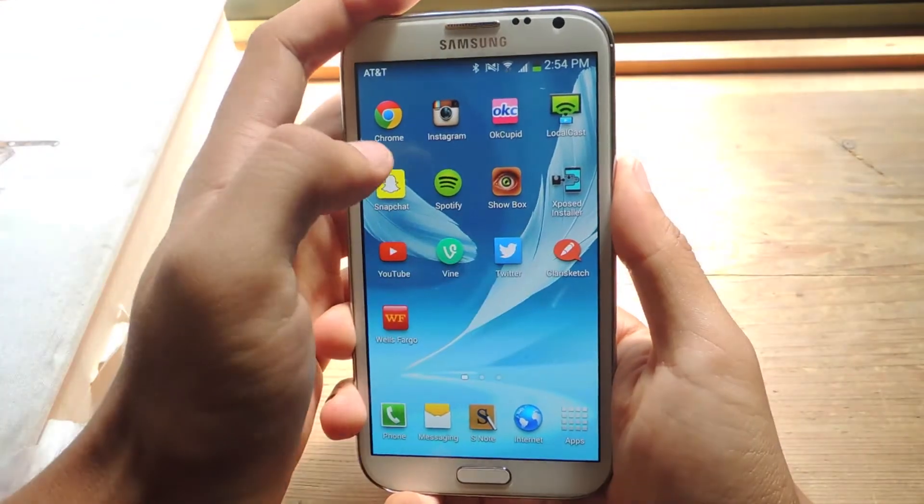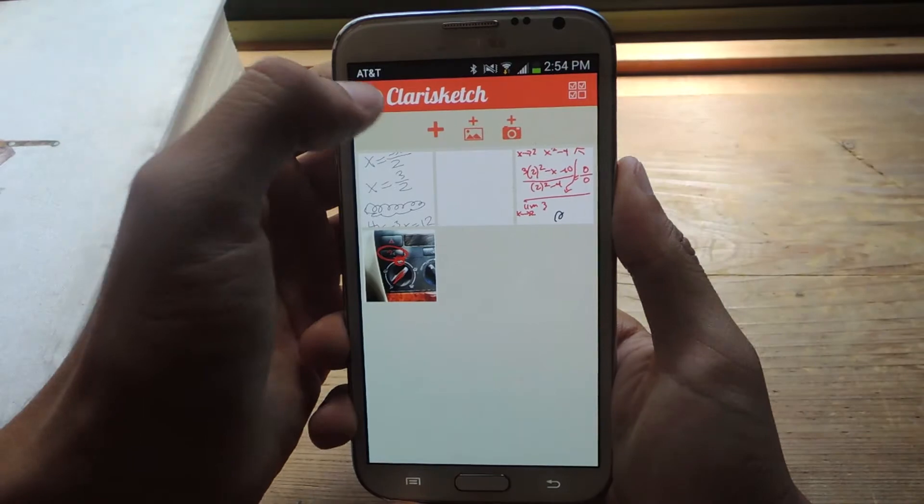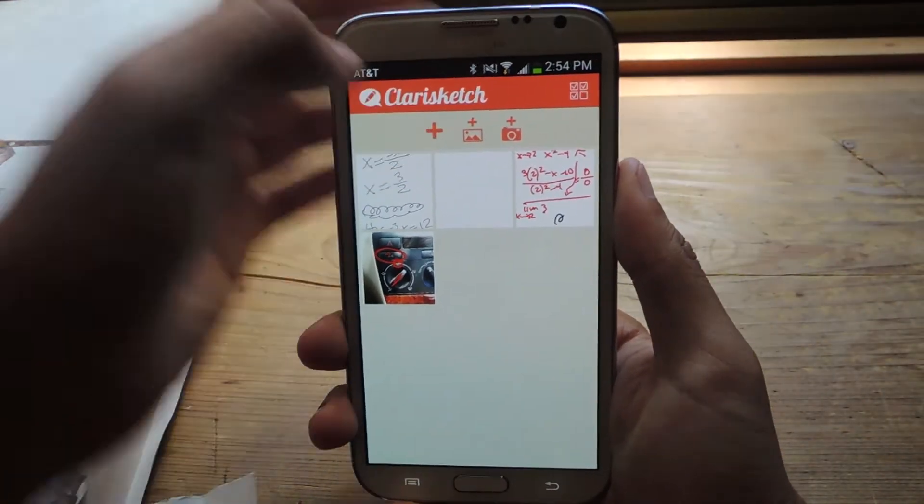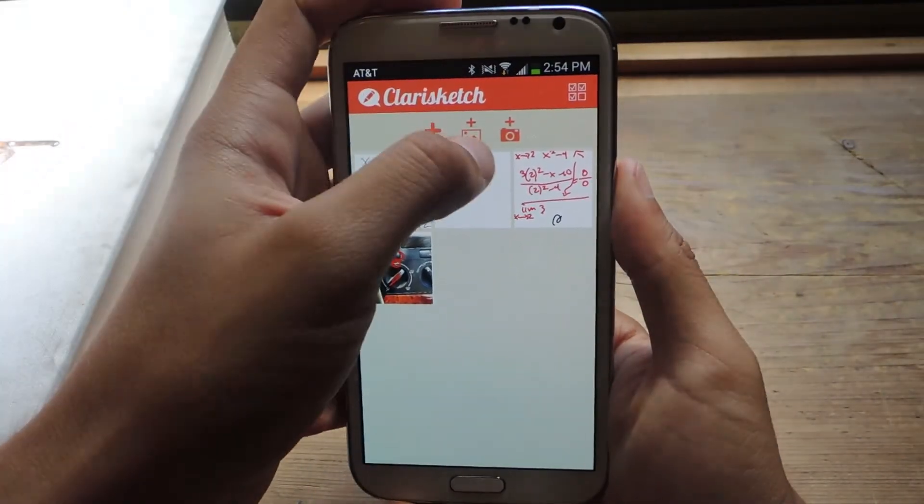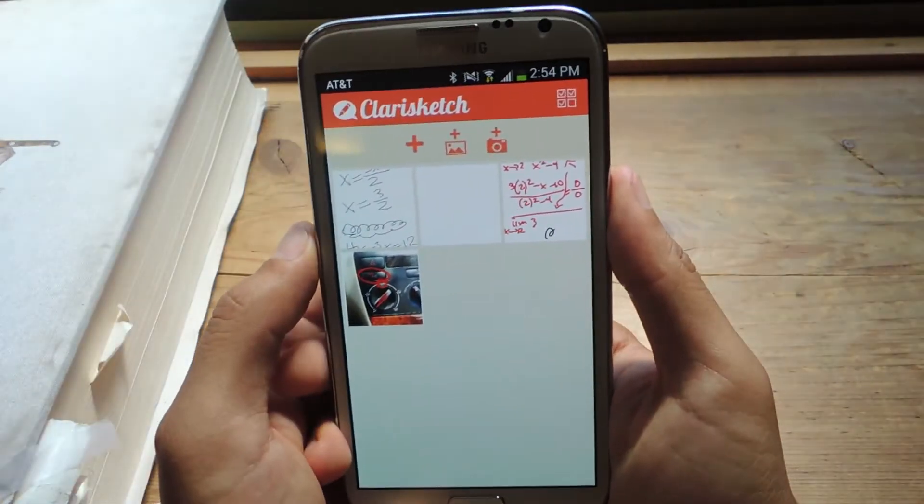So ClaraSketch, I've downloaded it, it's free from the Play Store, so I'm going to open it up. And here, you can tap on the plus sign to create a blank canvas that you can draw on, or choose a photo from your gallery, or take a brand new photo.